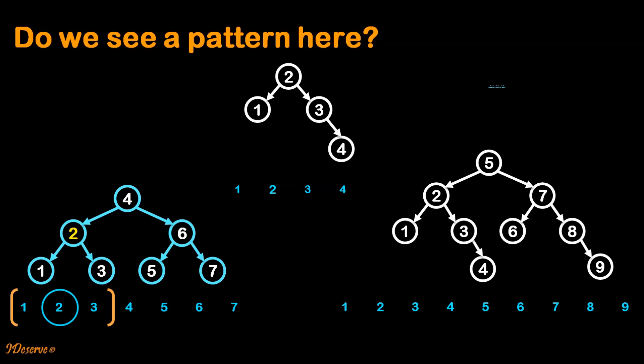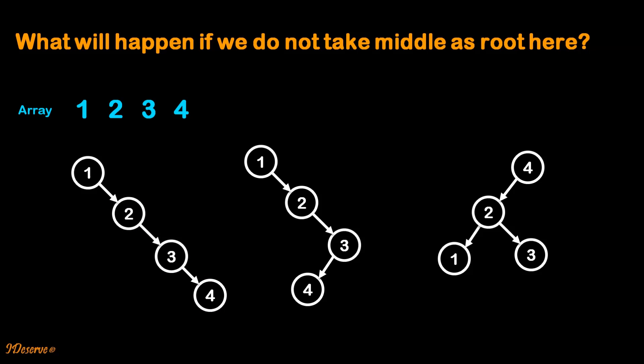The same is true for the right subtree as well. So our observation is that the root node is the middle element of the sorted array. What will happen if we do not take the middle as root? Consider the following binary search trees created from this array — none of them are balanced.